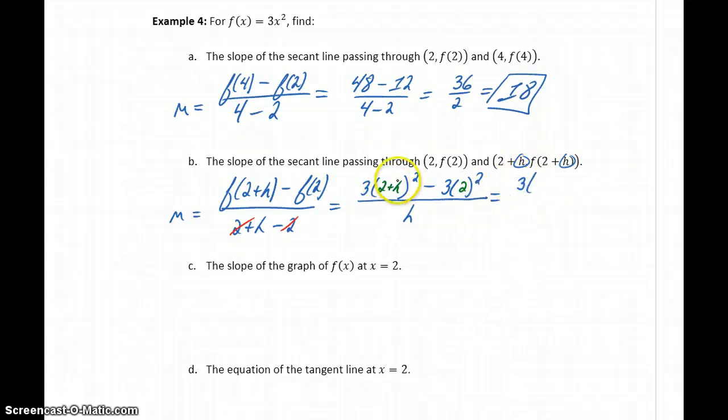So expanding (2 + h) squared, we'll get 3 times (4 + 4h + h squared). Minus 3 times 2 squared will give us 12, divided by h.